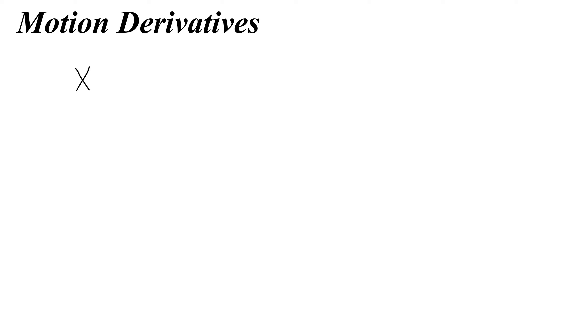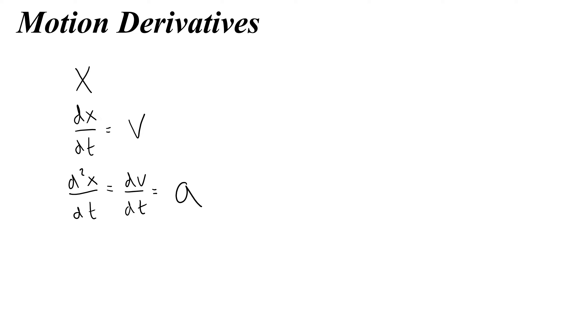In this video we're going to talk about indefinite integration and motion, or the antiderivatives of motion. To get started, let's remember what the derivatives of motion are. We start with x for position, and the derivative of position with respect to time is velocity. Then the second derivative of position with respect to time, or the derivative of velocity with respect to time, is acceleration.